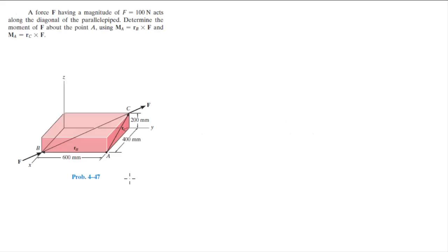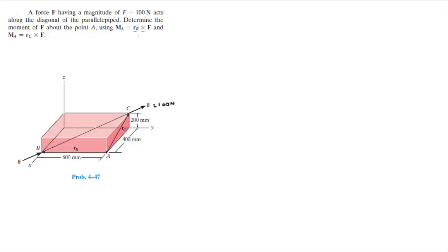Alright guys, let's do this problem in which a force F having a magnitude of 100 N acts on the diagonal of the parallelepiped. Determine the moment of F about A using two different formulas: MA equals Rb cross F, and MA equals Rc cross F.